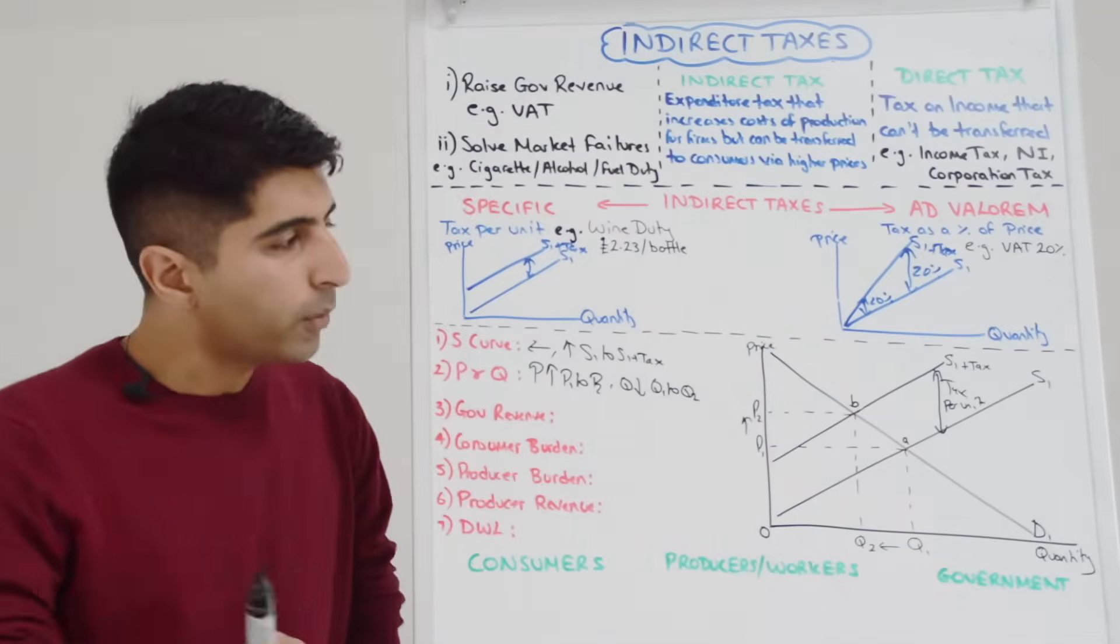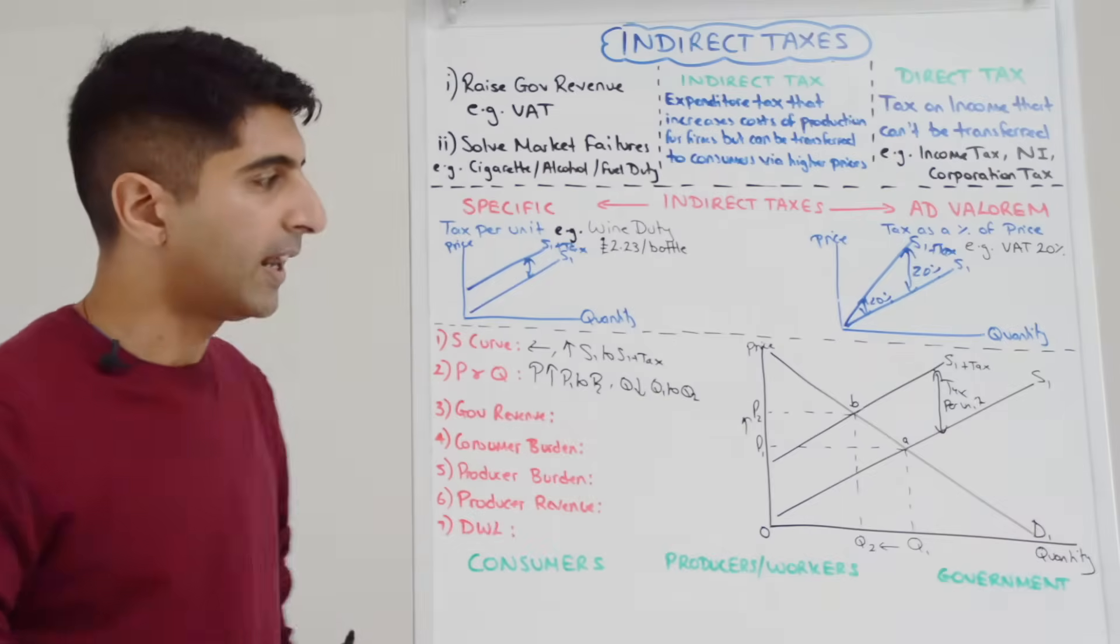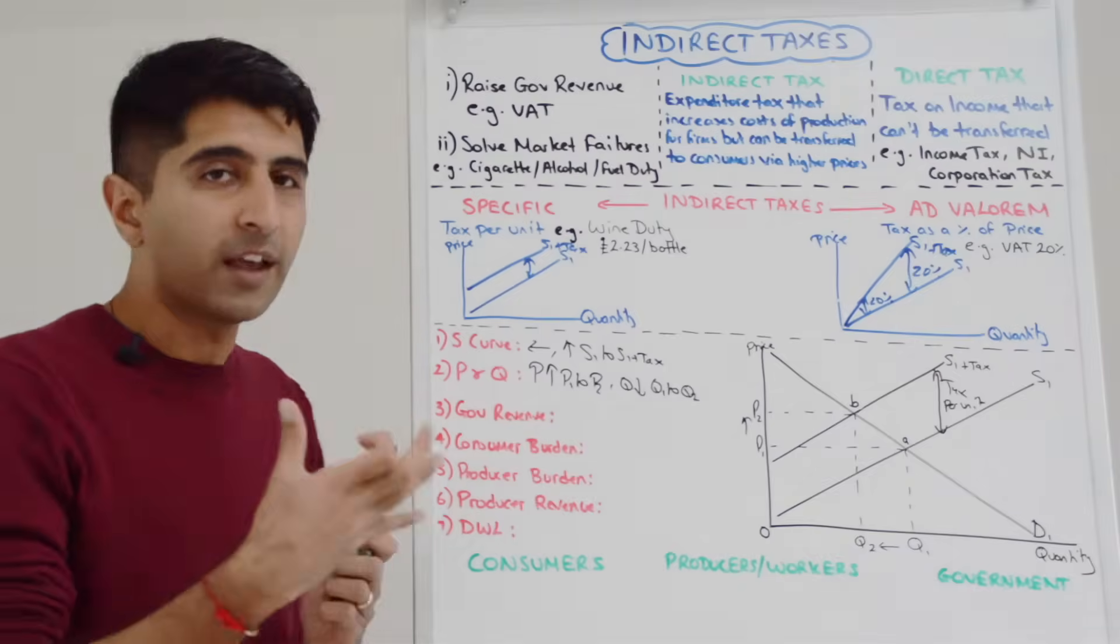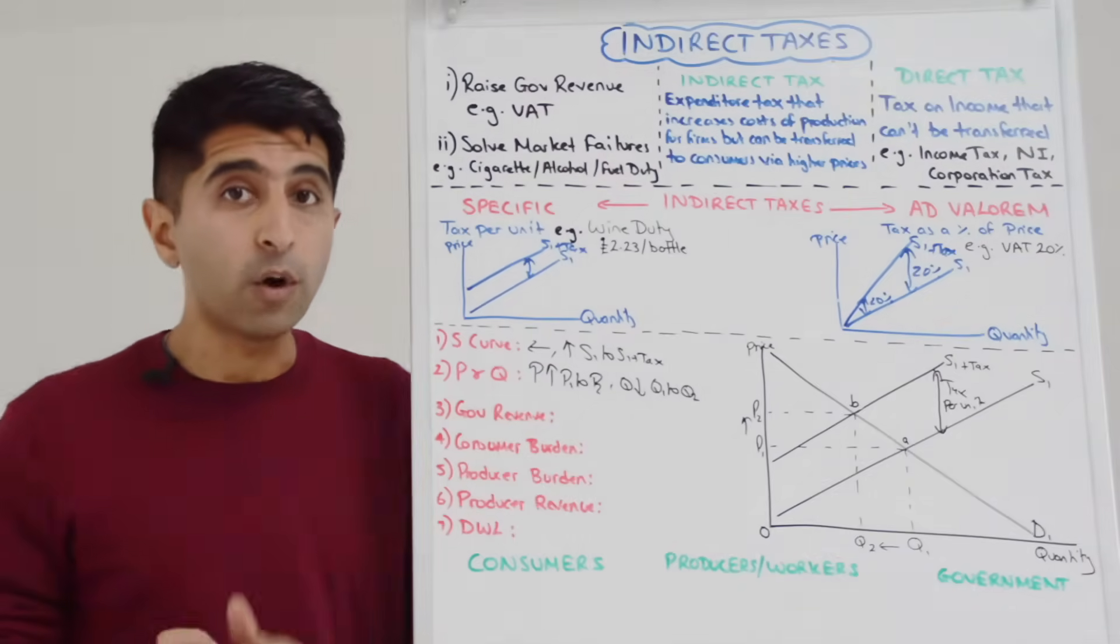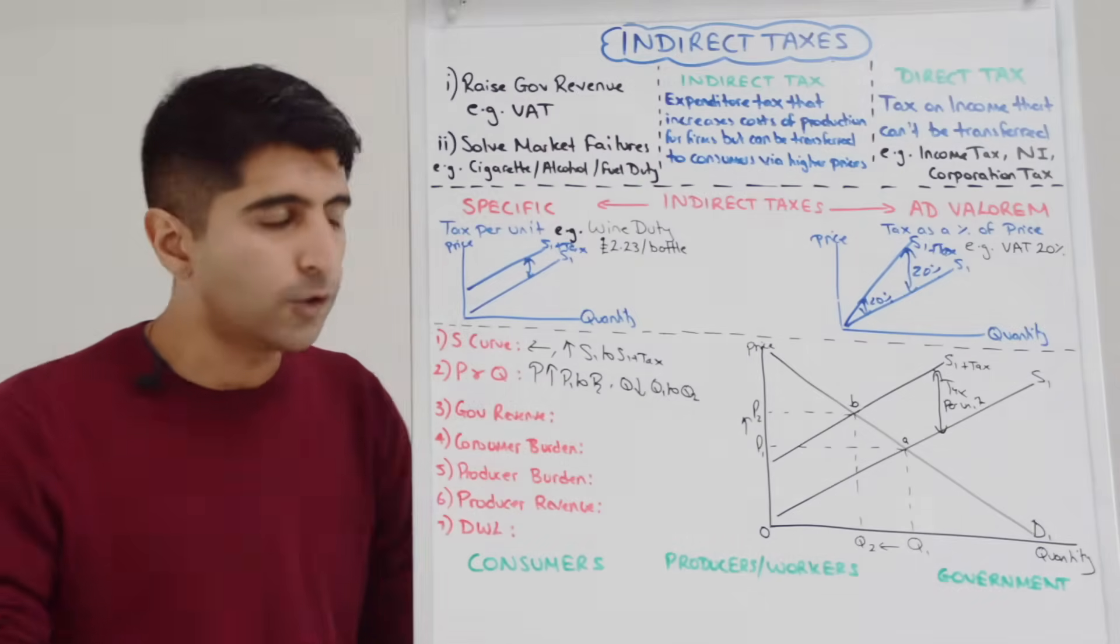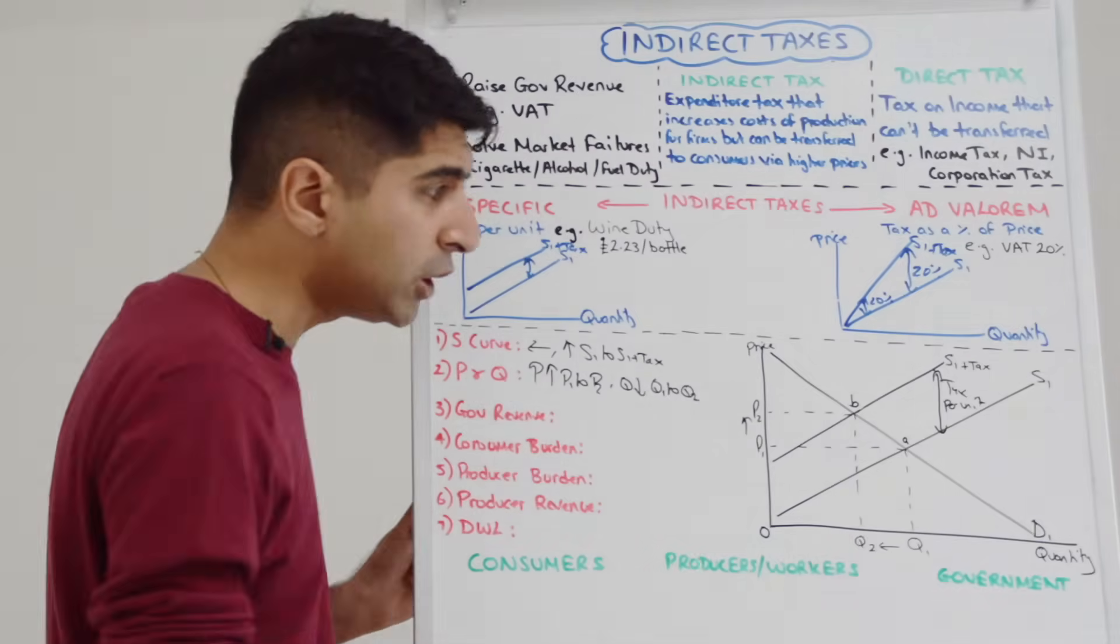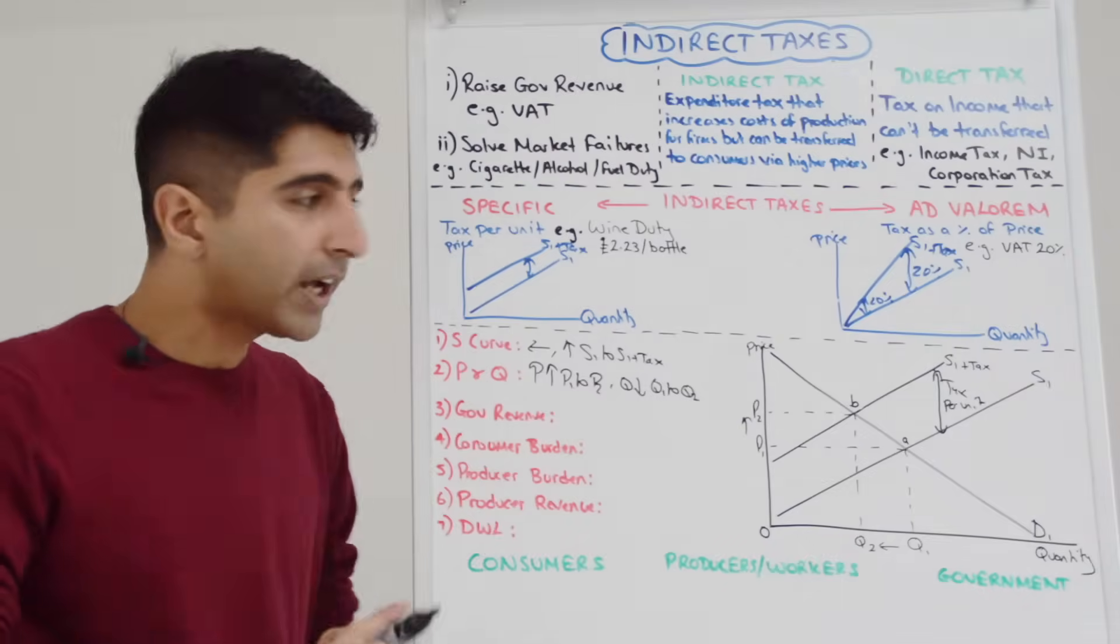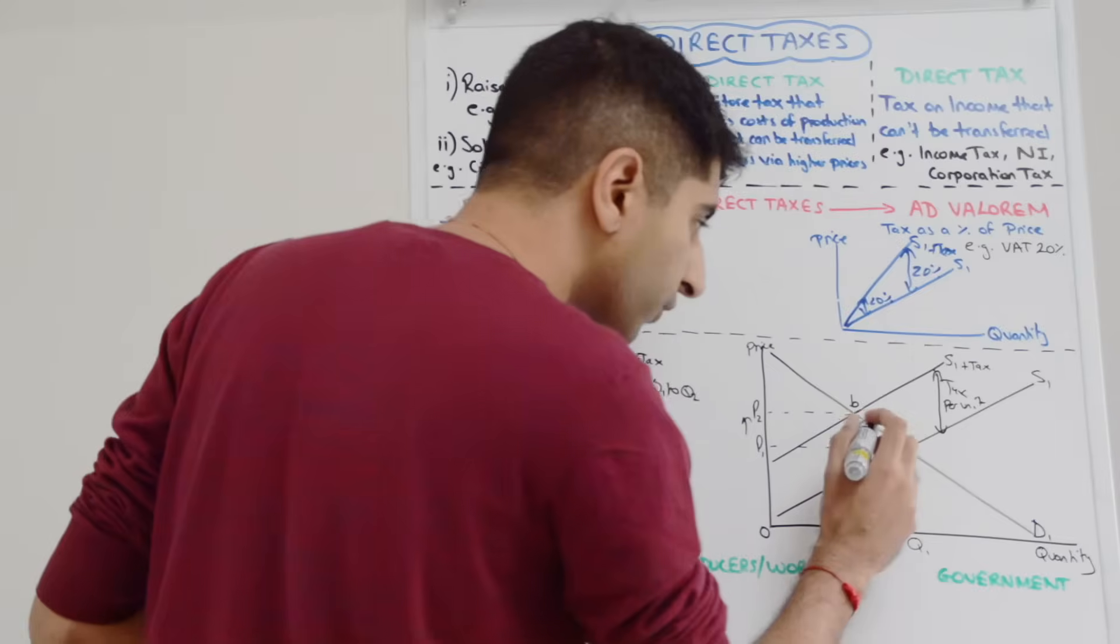Great stuff, very simple. We know this already from our basic market analysis that we've done in prior videos. But we can go a lot deeper when we are studying the impacts of an indirect tax. What we can actually work out on this diagram is the amount of government revenue collective, and here's how you do it.